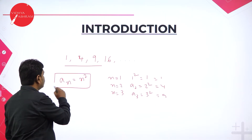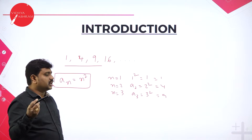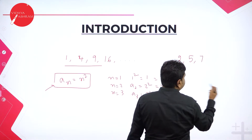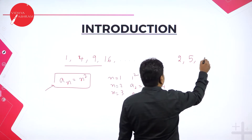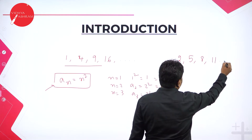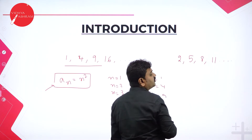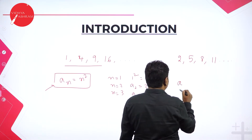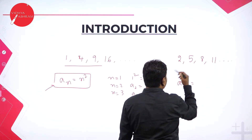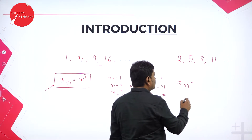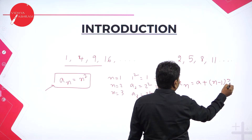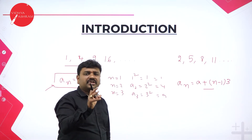When numbers follow some formula or rule, we say they are in a sequence. For example, 2, 5, 8, 11 — for every number it gets added with 3. So a_n = 2 + (n−1)×3, where the first term is 2 and the common difference is 3. Substituting this formula gives all the terms.